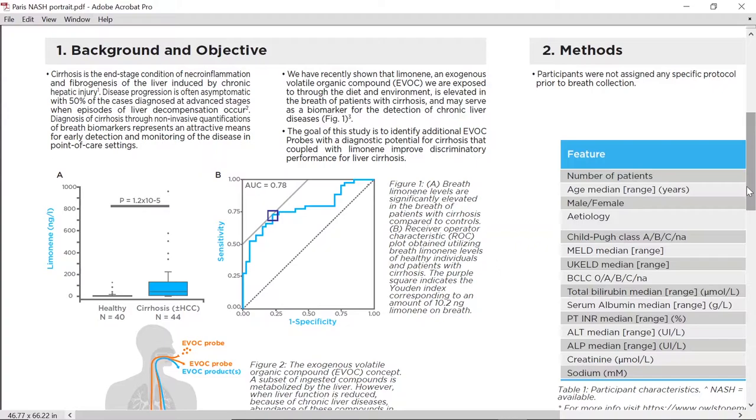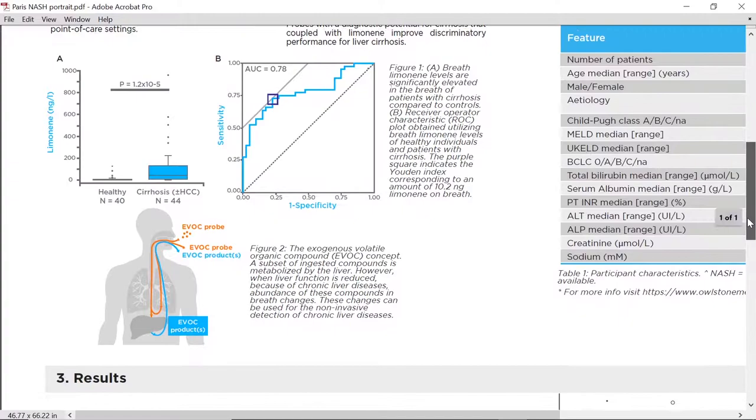As illustrated in Figure 1, we have recently shown that breath limonin levels are elevated in patients with cirrhosis and can be used for disease detection.